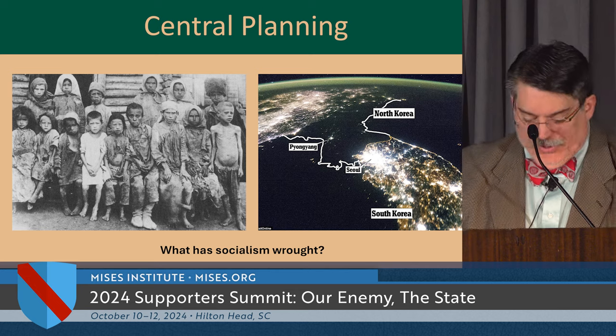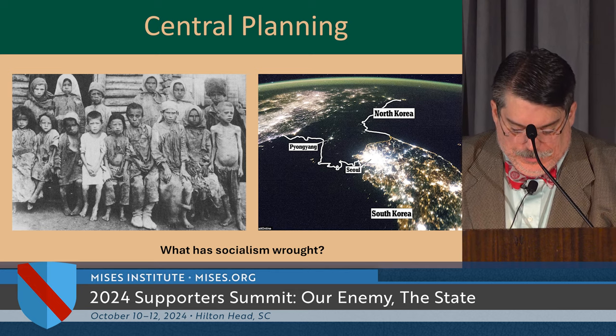As Mises says, what is called a planned economy is merely groping about in the dark. And even if the state attempts centrally planned regulation by mandates — without going whole hog with socialism — to the extent that they push regulation and mandates, that effectively neutralizes a functioning price system and still leaves us relatively impoverished.